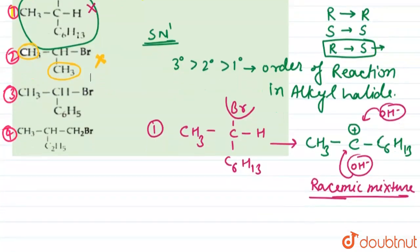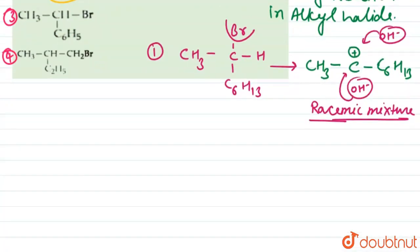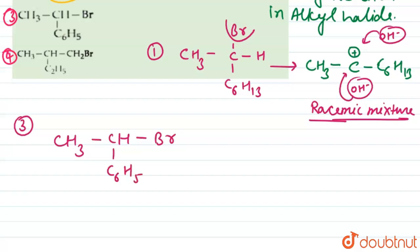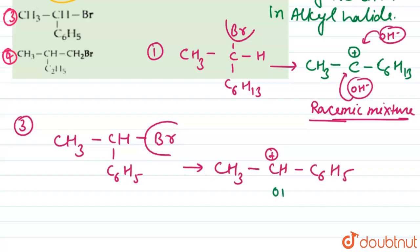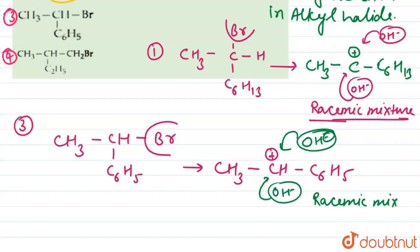Option number three has the compound CH₃CHBrC₆H₅. After substitution, Br⁻ is removed and a carbocation CH₃CH⁺C₆H₅ is formed. OH⁻ can again attack from both sides, so a racemic mixture is formed. It can show both R and S configuration, so this option is also incorrect.